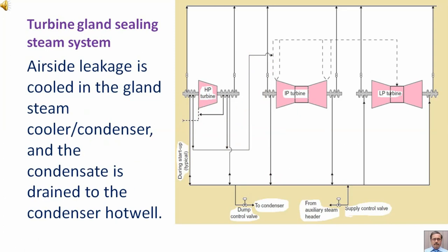Air side leakage is cooled in the gland steam cooler condenser, and condensate is drained to the condenser hot well.